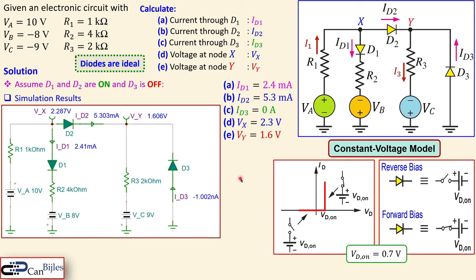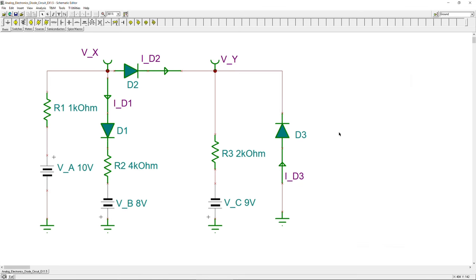The slight differences between our calculation and the simulation are due to the actual diode voltage drop not being exactly 700 millivolts — it could be slightly larger or smaller. If we knew the exact diode voltages, the results would match exactly. Let's now jump to the SPICE simulator and look at those actual diode voltages to understand why these small differences appear.